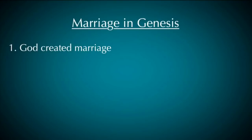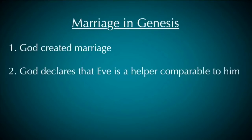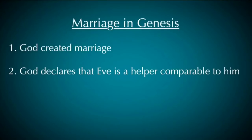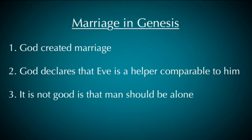Secondly, it reveals what God declares Eve to be — a helper who is comparable to him. The word 'comparable' speaks of someone similar to him, literally his reflected image. She is his counterpart, suitable in nature, one like himself in shape and disposition — his second self, corresponding to his moral and intellectual nature. The third thing we see is that the first thing ever called 'not good' is that man should be alone, emphasizing his need for a companion. There were angels and animal life, but that wasn't enough for Adam — he needed someone like himself.